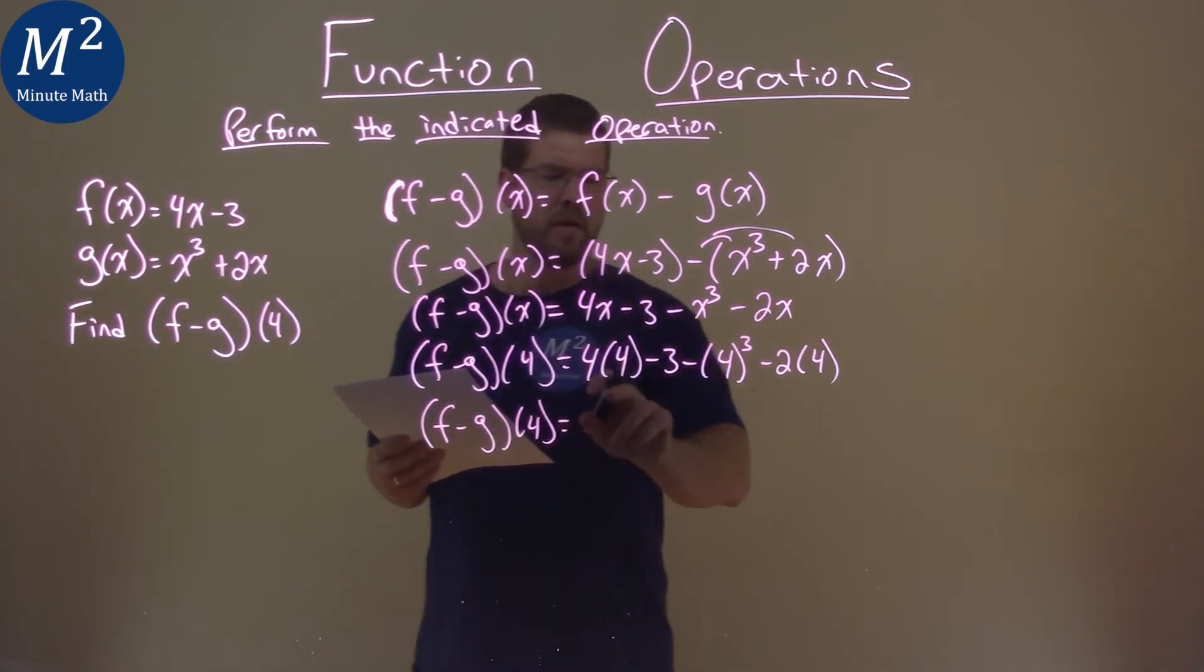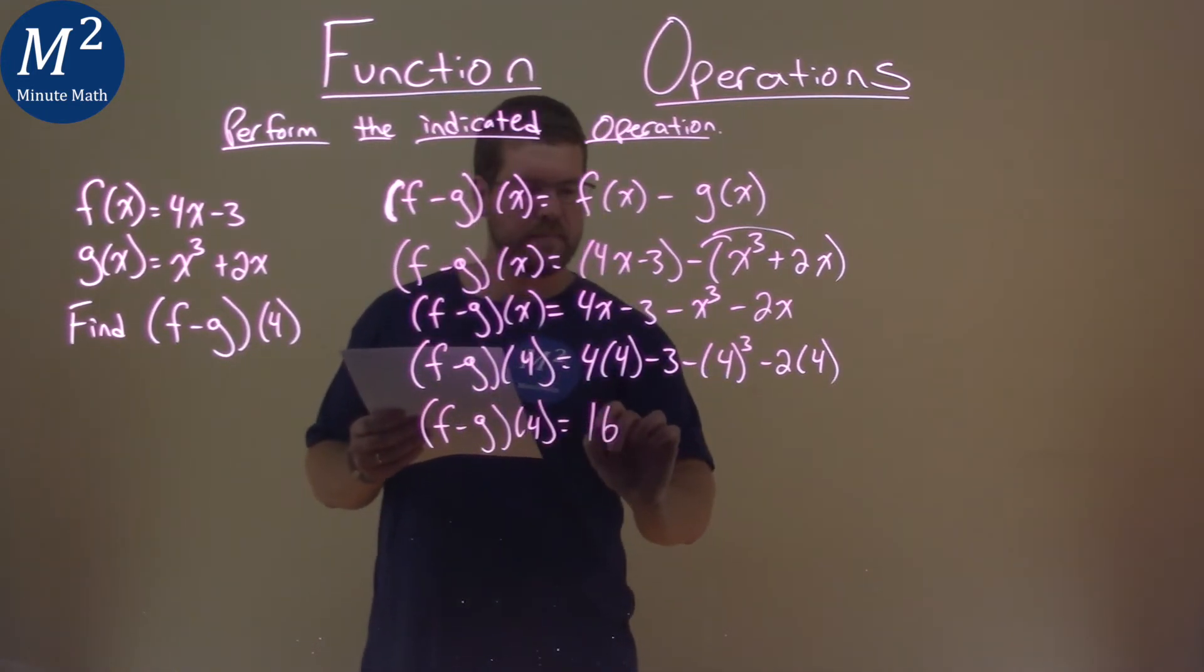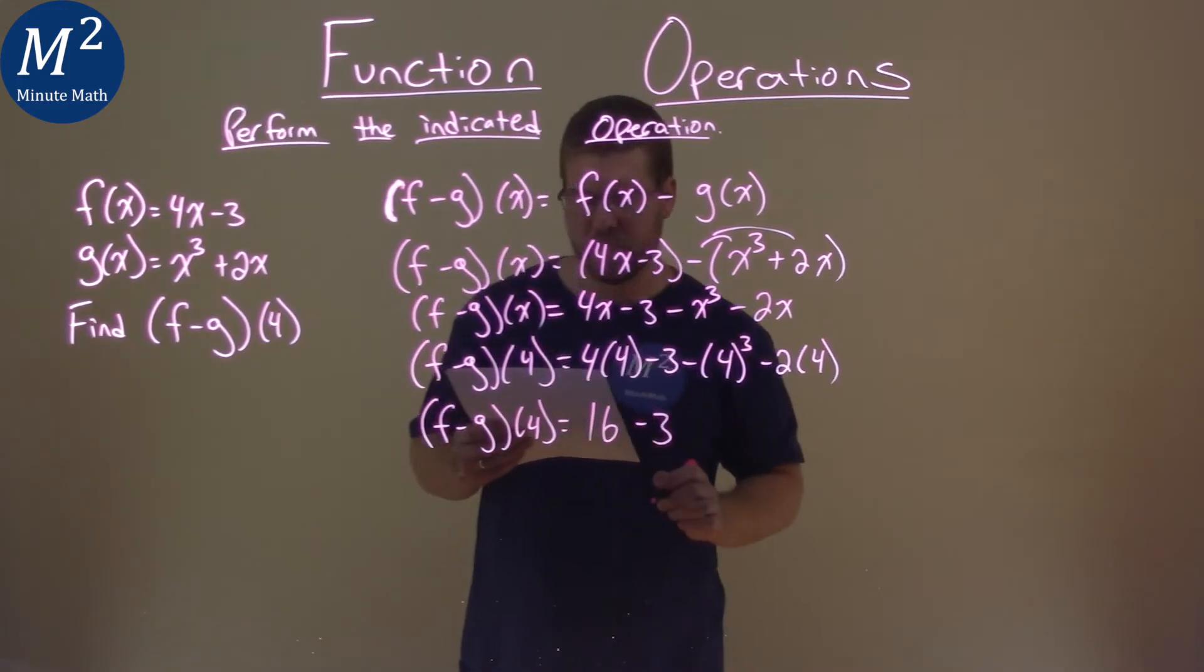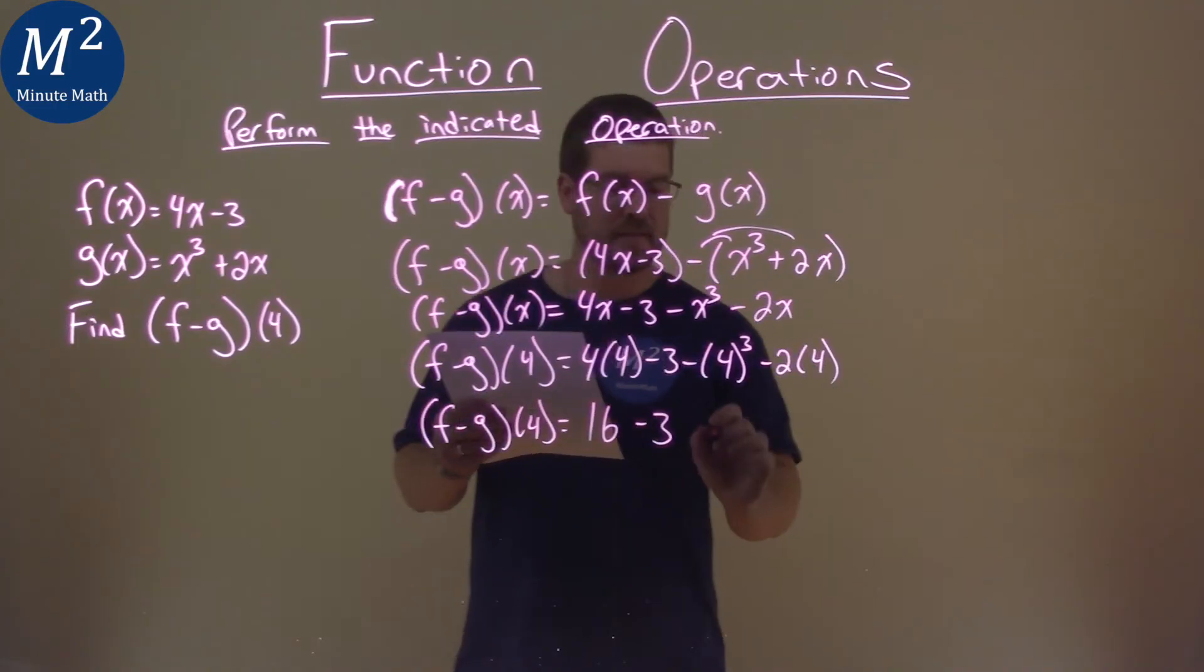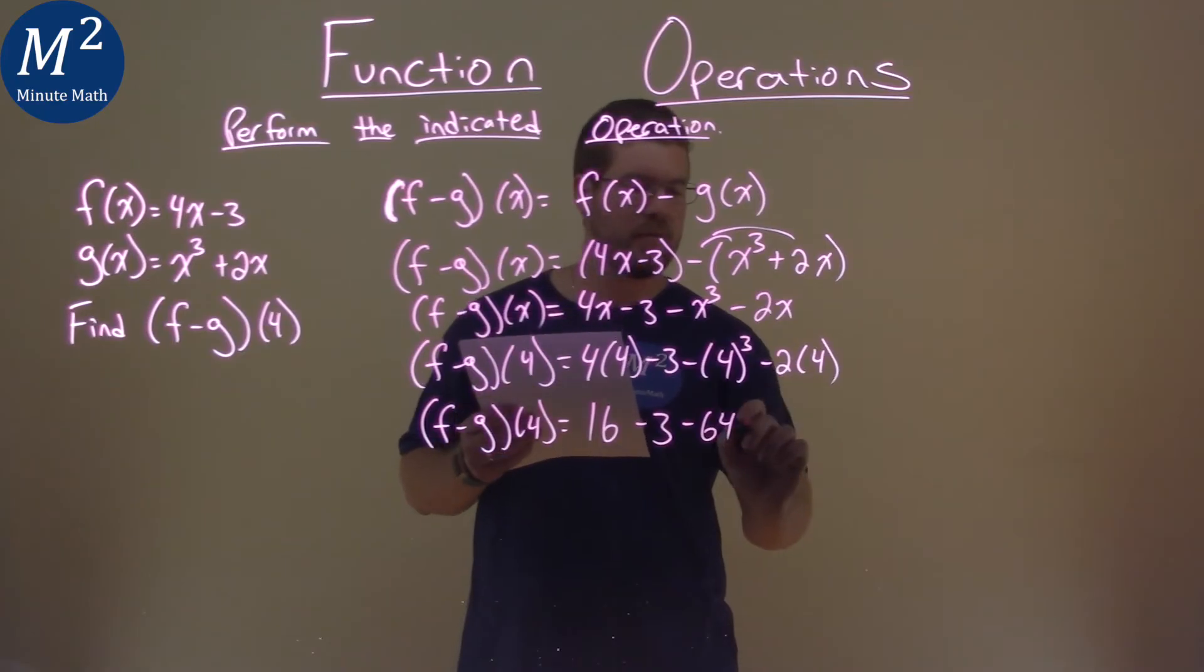4 times 4 is 16. We have minus 3 here. And then 4 to the third power is 64, so we have minus 64, and 2 times 4 is 8.